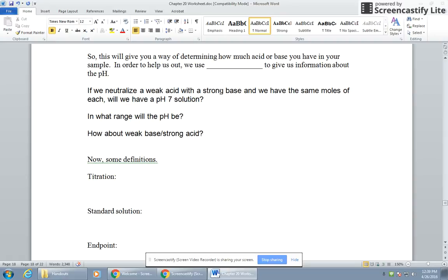If we neutralize a weak acid, this is pre-IB just very briefly. If we neutralize a weak acid with a strong base and we have the same number of moles of each, will we have a pH 7 solution of a weak acid and a strong base? Will it be pH 7? The answer is no, it will not be pH 7. Strong acid, strong base, yes. Weak acid, strong base? No. Now use your crazy intuition and tell me whether the range of pH will be above 7 or below 7. If we take a weak acid and a strong base, we have the same number of moles of each. And then I want you to answer the same question for a weak base and a strong acid. It will be above 7 or below 7. It won't be 7 because they're not the same strength.